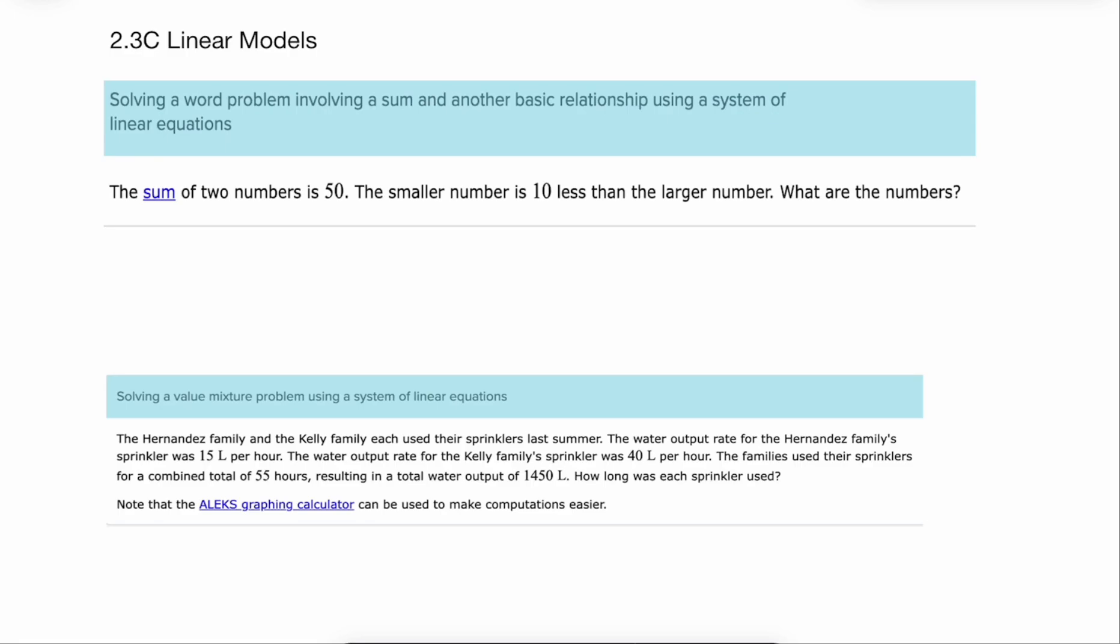In 2.3C we are going to talk about linear models. So we're going to talk about some of those word problems that lend themselves toward a system of linear equations. So let's look at our first one here. It says the sum of two numbers is 50. The smaller number is 10 less than the larger. What are the numbers?